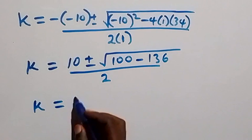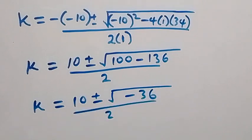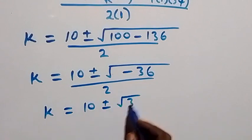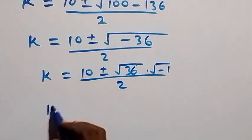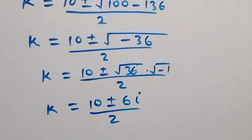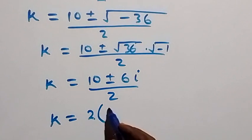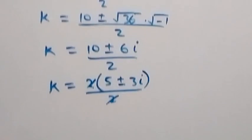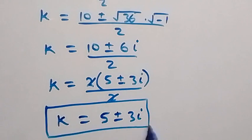This becomes k equals 10 plus or minus square root of minus 36, over 2. Which can be written as k equals 10 plus or minus root 36 times root minus 1, over 2. Since root 36 is 6 and root minus 1 is i, we have k equals 10 plus or minus 6i over 2, which simplifies to k equals 5 plus or minus 3i. So we have 2 complex solutions.